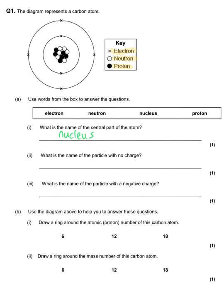The next part asks for the name of the particle with no charge. The particles all have charges: the proton is positive, the neutron has no charge, and the electron is negatively charged. So the particle with no charge is the neutron — just watch your spelling on that — and the particle with negative charge is the electron. That's one mark for each of those answers.